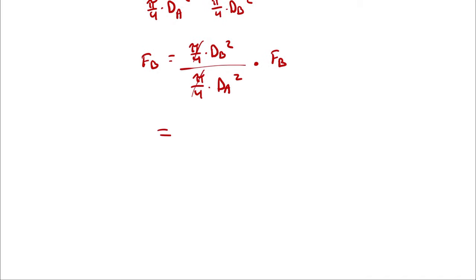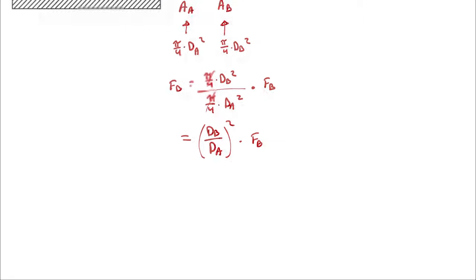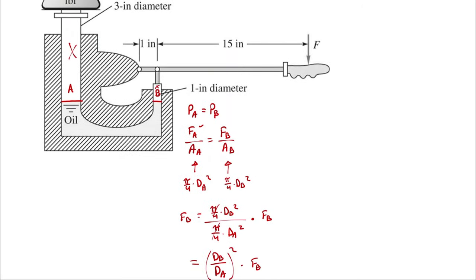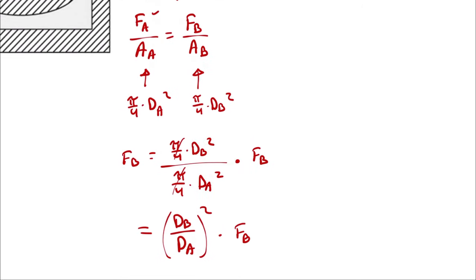So I can write this as diameter B over diameter A, quantity squared, times FA.